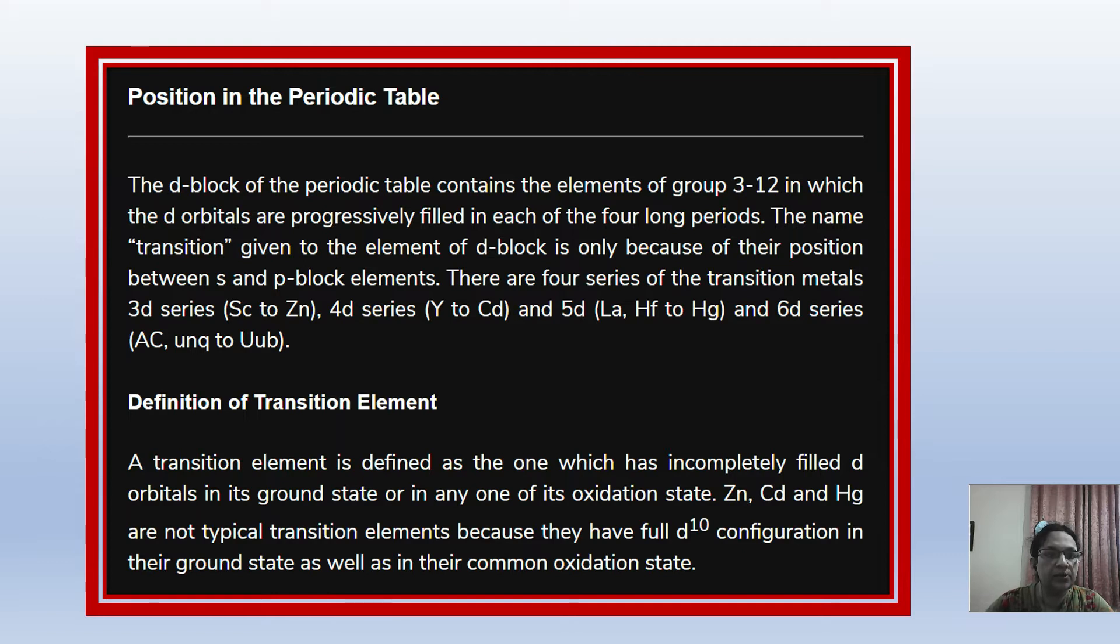First thing is that in the Periodic Table, the transition elements, D Block or F Block, where do we find them? D Block in the Periodic Table is called Group 3-12. Remember that. It's called Transition because of their position between S and P Block. In the Periodic Table, left side is S Block, middle is D Block, right side is P Block, and below is F Block. So this is S to P transition.